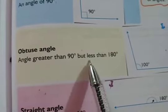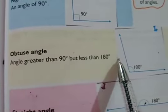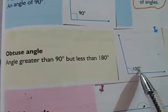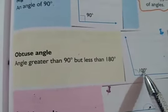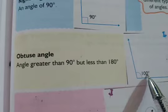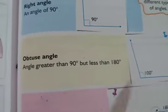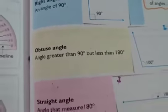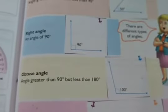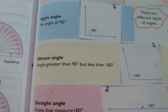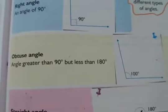An obtuse angle is an angle greater than 90 degrees but less than 180 degrees — for example, 100 degrees. An angle which is greater than 90 degrees but less than 180 degrees is called an obtuse angle.